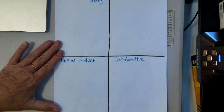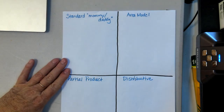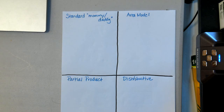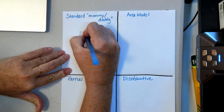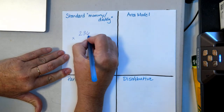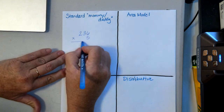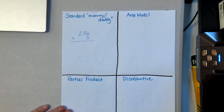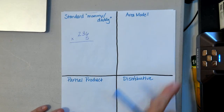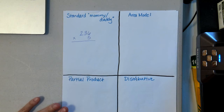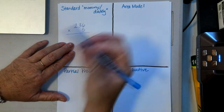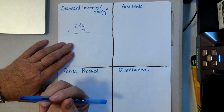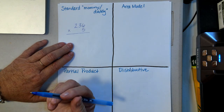Let's go ahead and do the standard mommy daddy method first. The problem we're going to be using is 236 times 5. So I'm going to write 236 times 5. With the standard method, we always start in our ones place and then move to the left. Five times six ones gives us thirty ones.